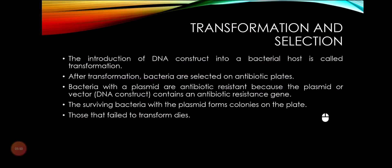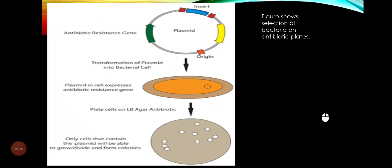The next step after fragmentation and ligation is transformation and selection. After the recombinant plasmid is constructed, it needs to be introduced into a host cell — which is mostly a bacterial cell, typically E. coli. This process is called transformation. The bacterial cells are made competent and then exposed to a heat shock at about 42 degrees centigrade, which causes the cells to take up the plasmid.